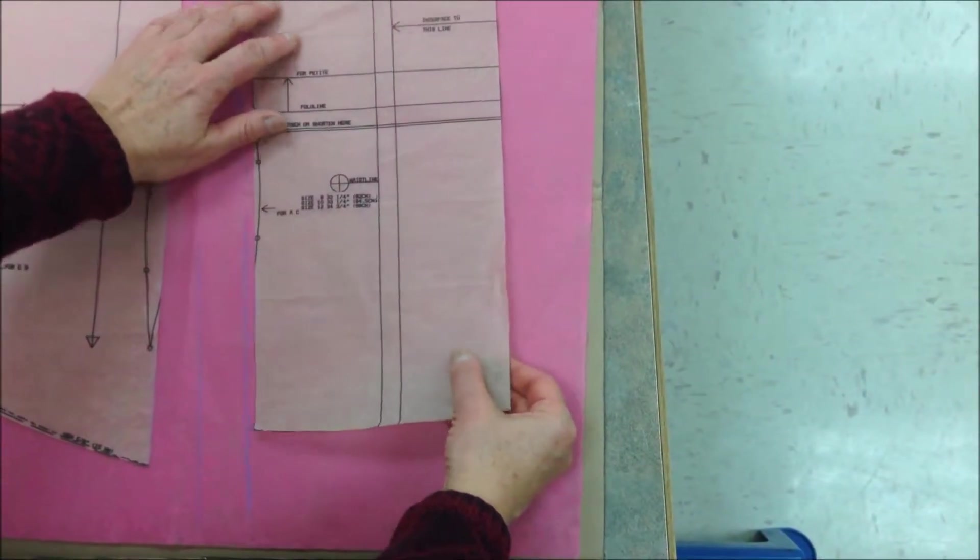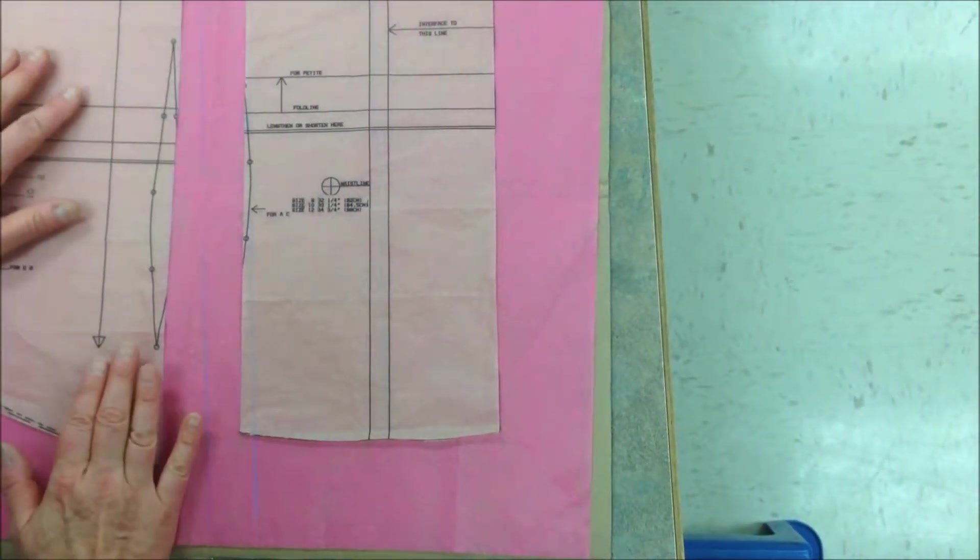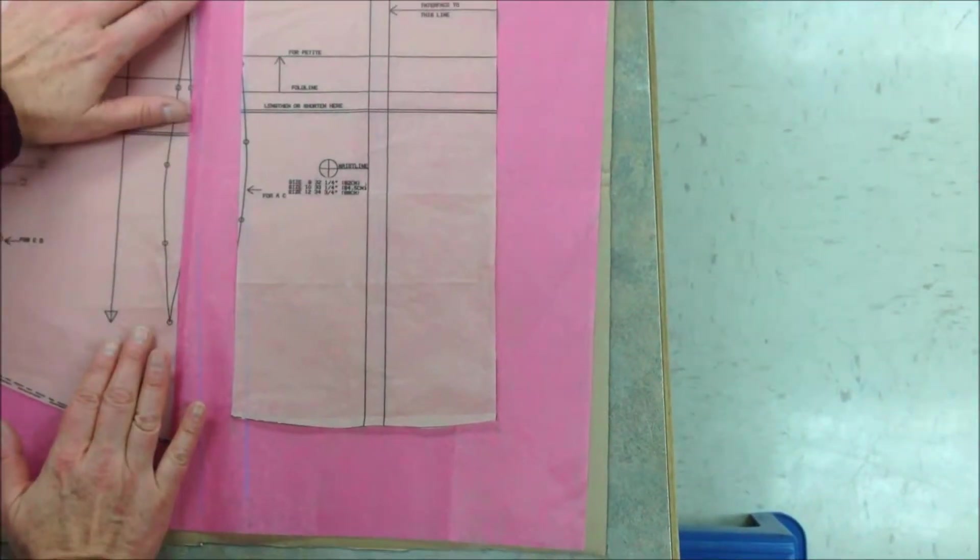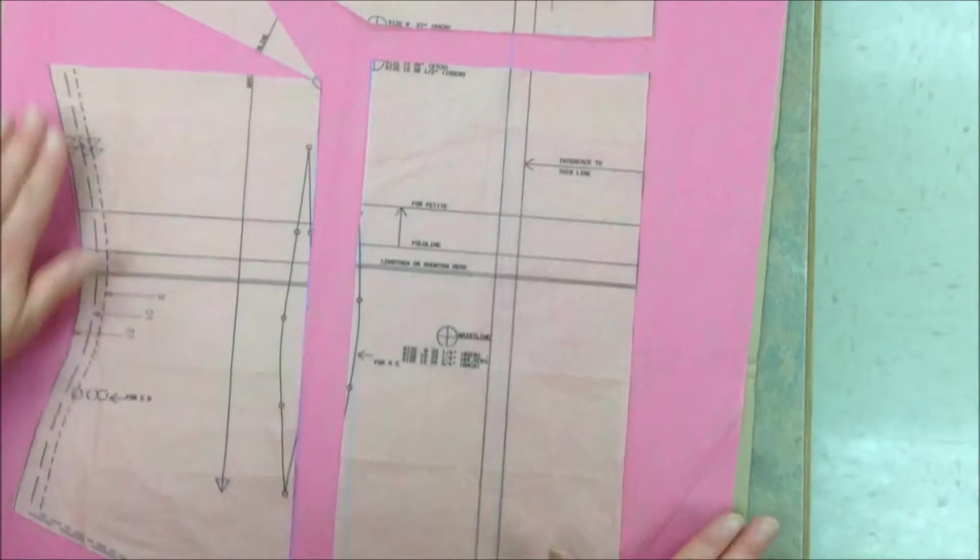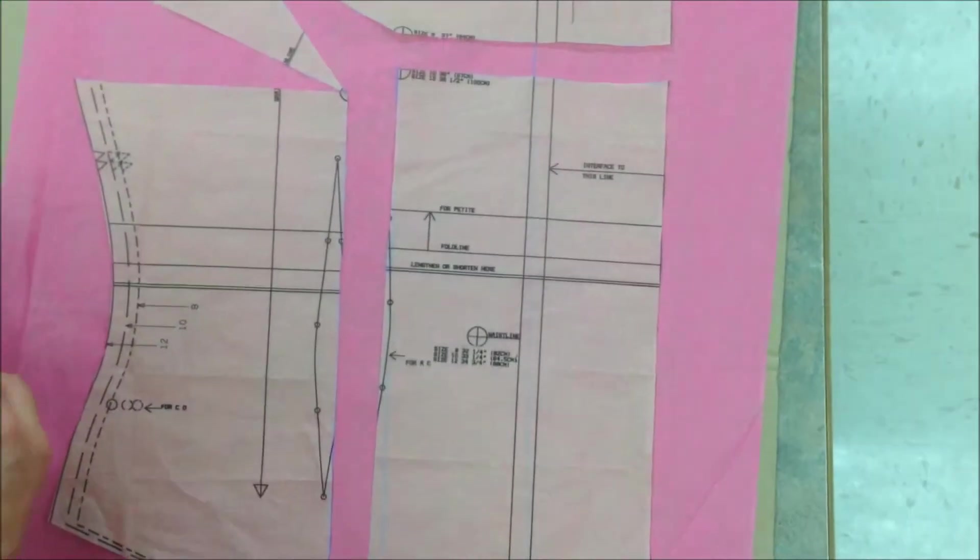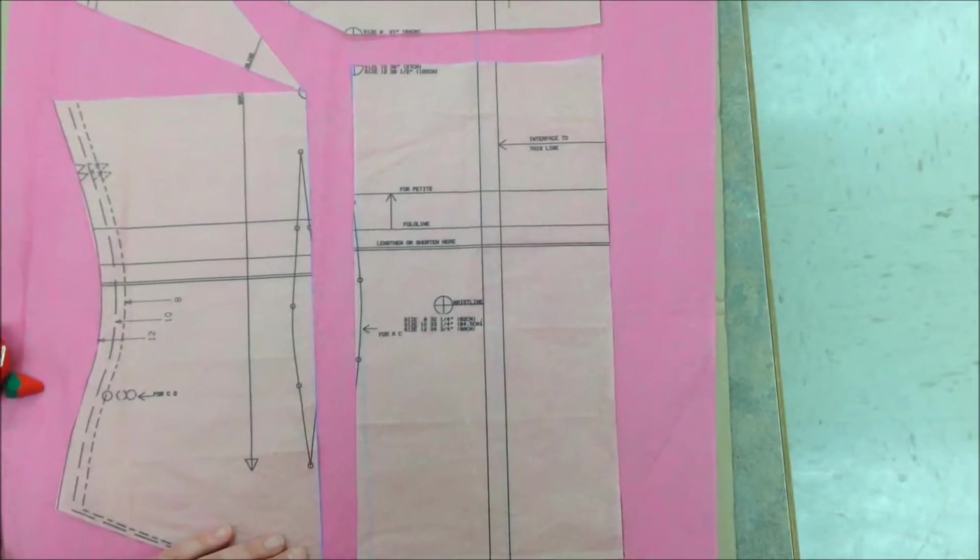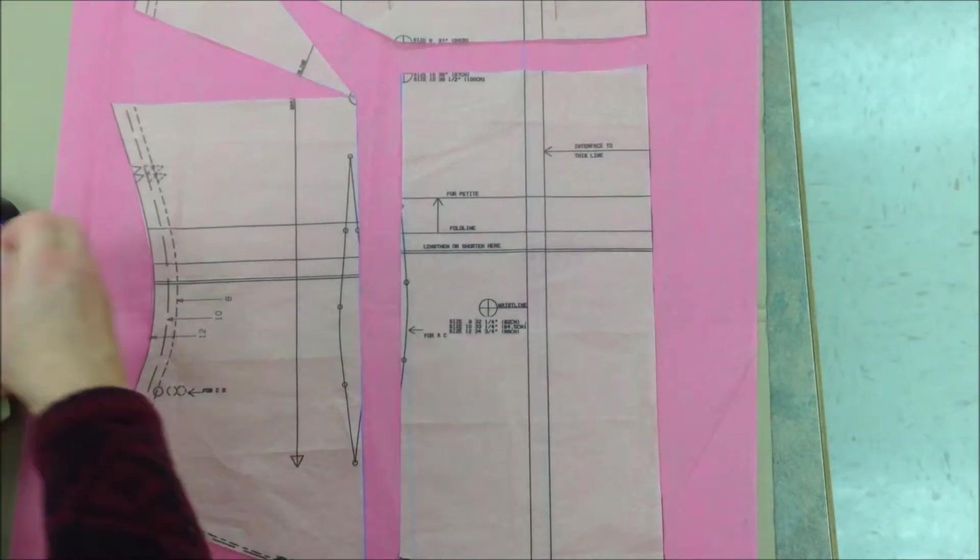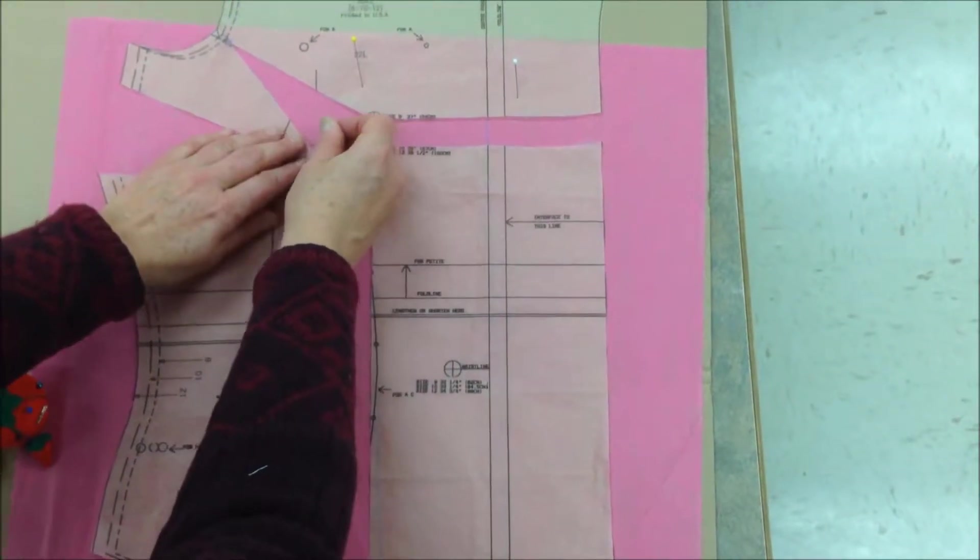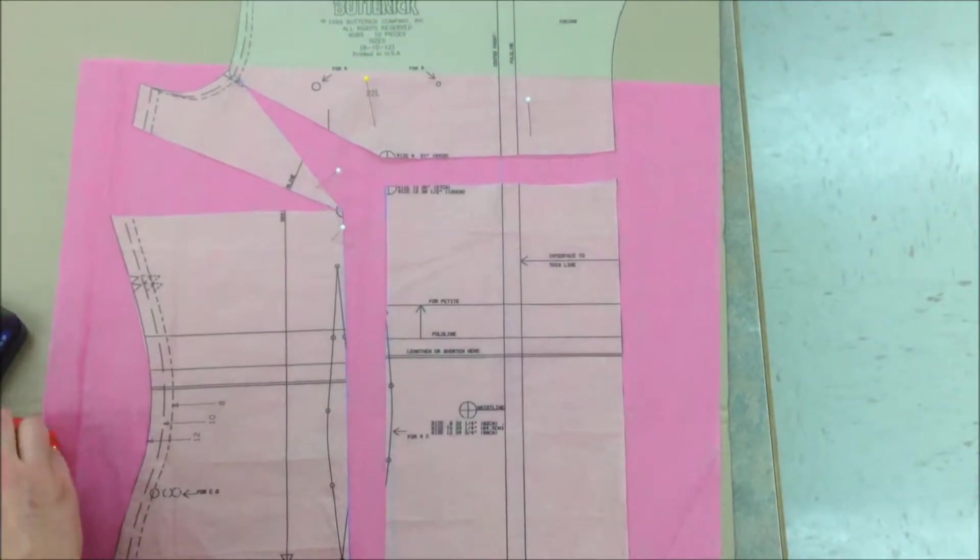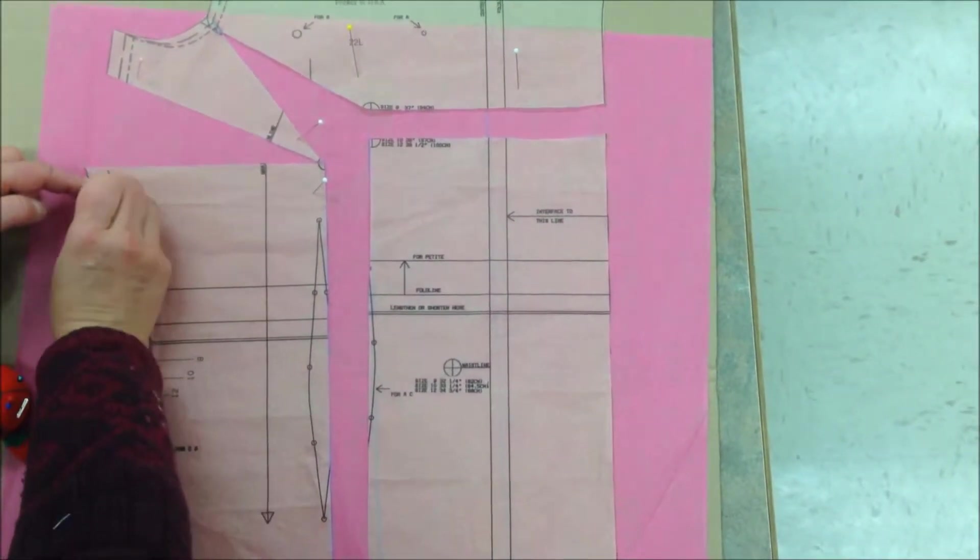Our front piece is going to go here. We're not sure yet how long it needs to be. But our side piece is going to hinge. Keep everything flat. Don't have any kinks, wrinkles. Try not to let your hinge break. And we'll line that up right on the inch and a quarter line. And notice it's now opened up an area to give us a bust dart.